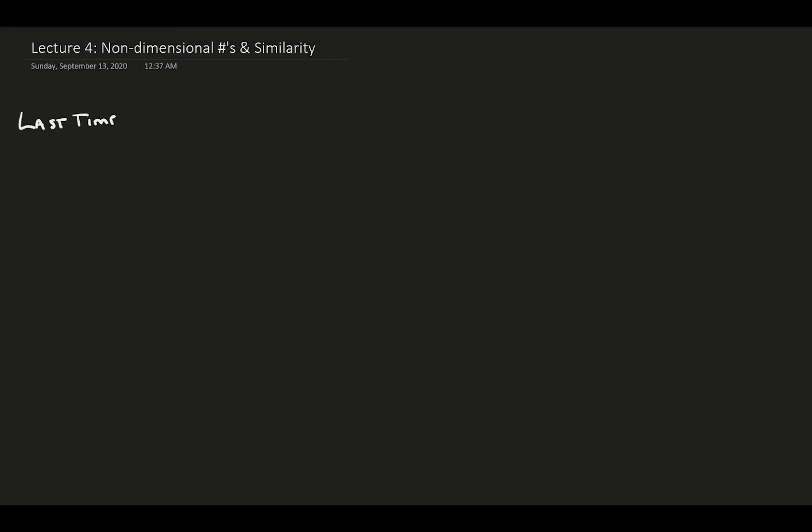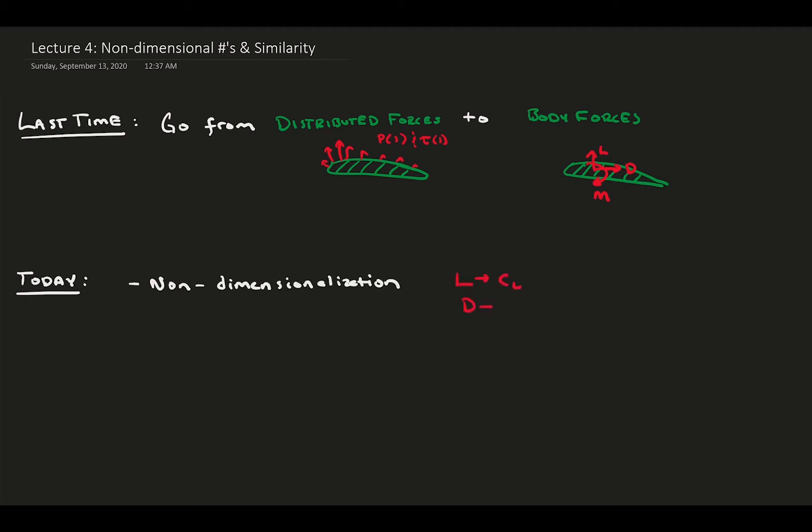Hello, and welcome to our fourth lecture in aerodynamics. Last time, we discussed how we go from distributed forces on an airfoil, like pressure and shear distributions, and how we translate them into body forces and moments about the chord. Today, we're going to be using these body forces and moments to explore non-dimensionalization, where we take dimensional quantities and normalize them by relevant parameters to make them more meaningful. This will naturally extend into a discussion about similarity, where we use some of these non-dimensional numbers while scaling a flow situation to ensure that both scales can be accurately compared. So let's jump right in.